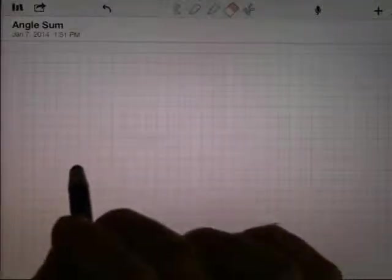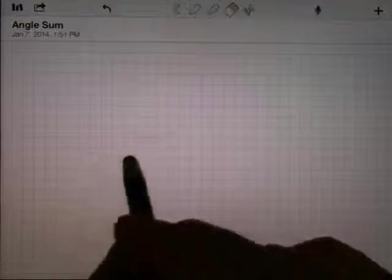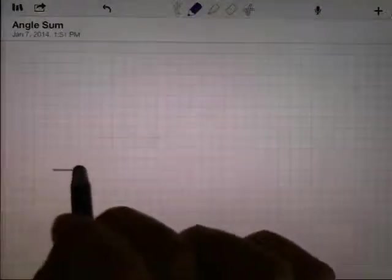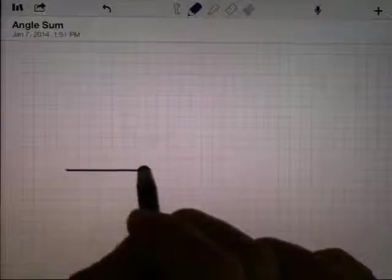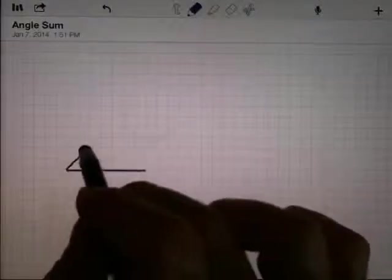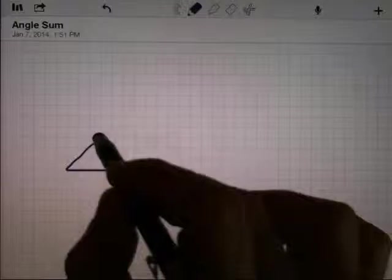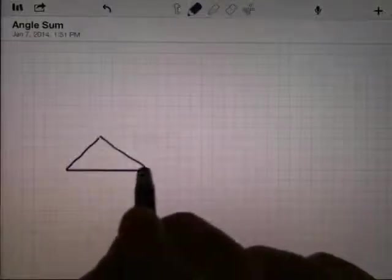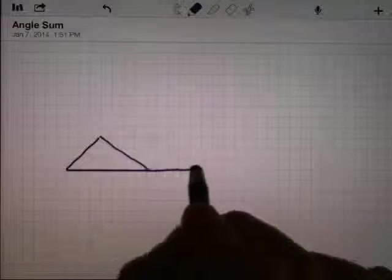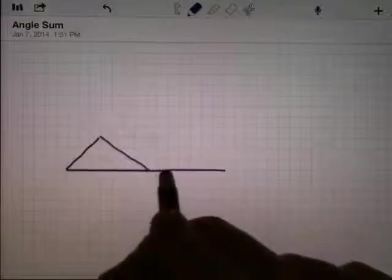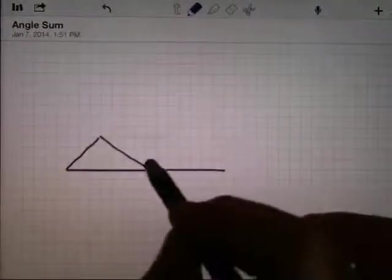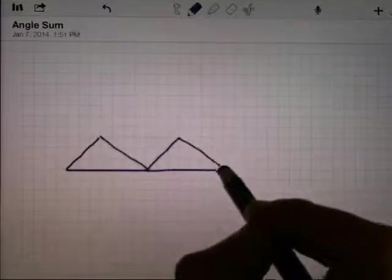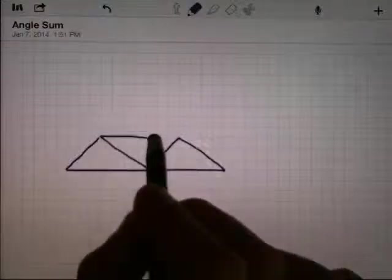So I'm going to start with a triangle here. I'm going to draw a triangle, and then I'm going to draw the same triangle again right beside it, trying to make it exactly the same size and shape. And I'm just going to connect the tops across here.